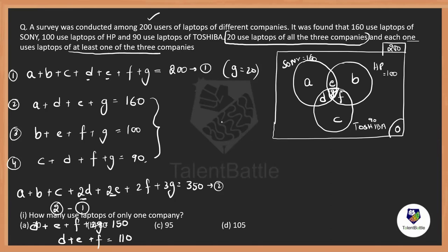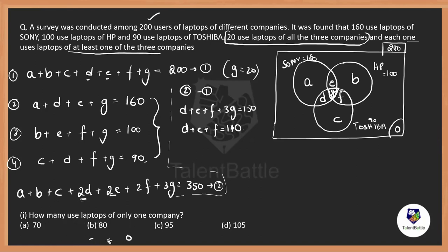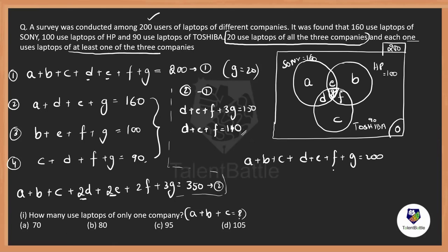This is the standard procedure for any three-circle Venn diagram question. Now the actual question: how many use laptops of only one company? That means I need A + B + C. From Equation 1: A + B + C + D + E + F + G = 200. We know D + E + F = 110 and G = 20. So A + B + C = 200 − 110 − 20 = 70. The answer is 70.